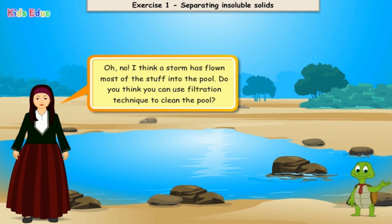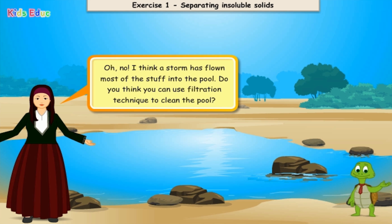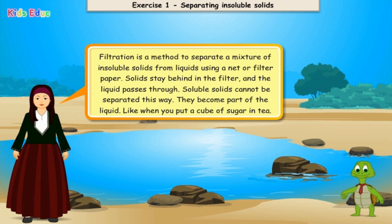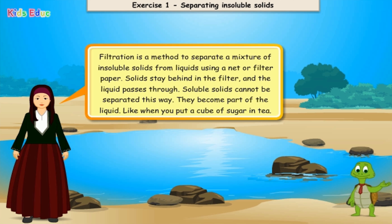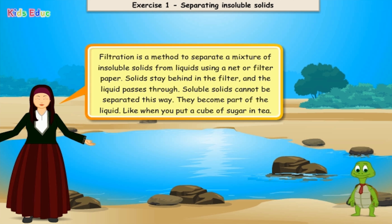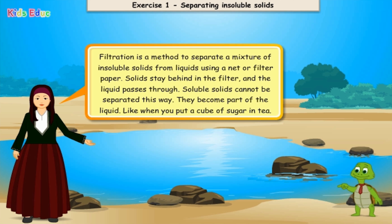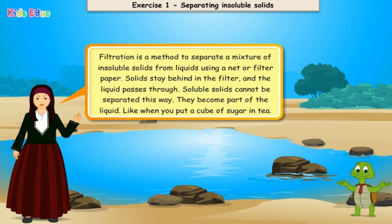Oh no, I think a storm has blown most of the stuff into the pool. Do you think you can use filtration technique to clean the pool? Filtration is a method to separate a mixture of insoluble solids from liquids using a net or filter paper. Solids stay behind in the filter, and the liquid passes through. Soluble solids cannot be separated this way — they become part of the liquid, like when you put a cube of sugar in tea.